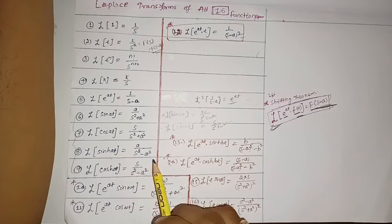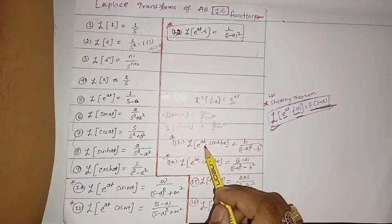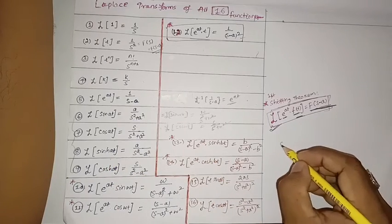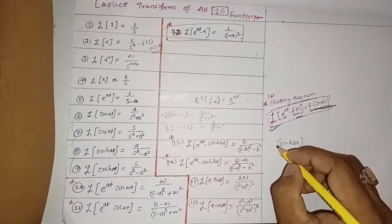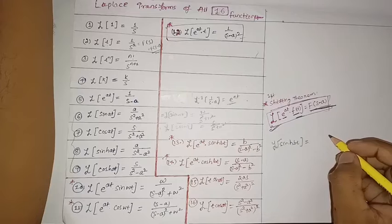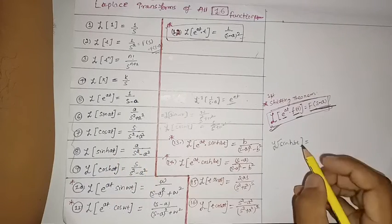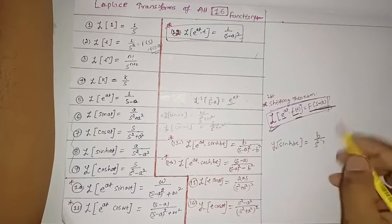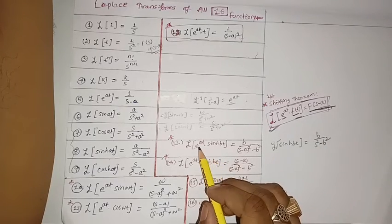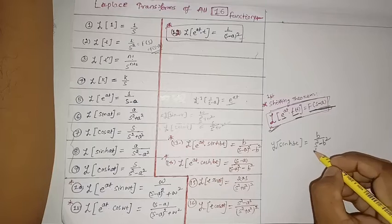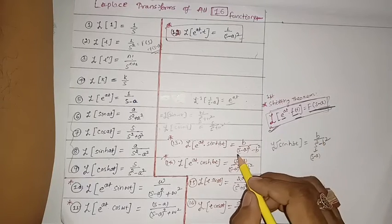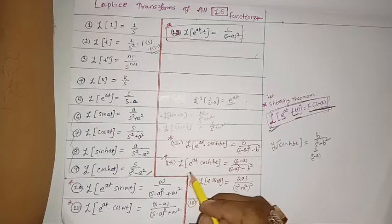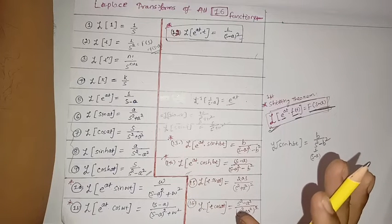For sinh(at), the Laplace transform is a/(s²-a²). For sinh(bt) it would be b/(s²-b²). If we multiply by e^(at), then according to the shifting theorem, s is replaced by (s-a), giving b/((s-a)²-b²). So by remembering up to the 9th function and using the shifting theorem, you can easily derive the 10th through 14th.